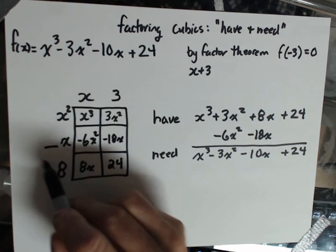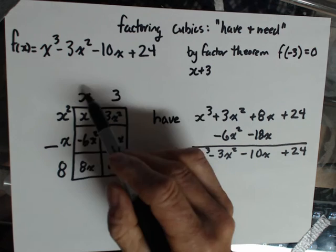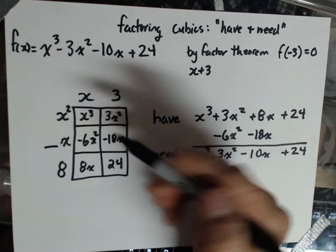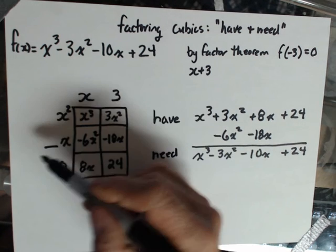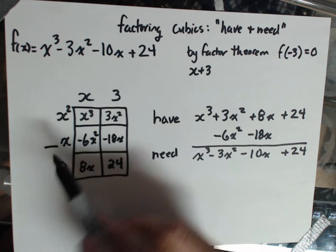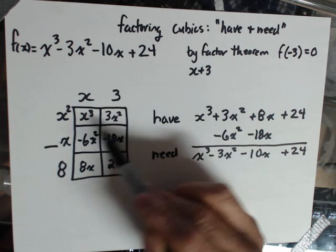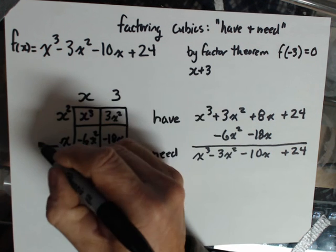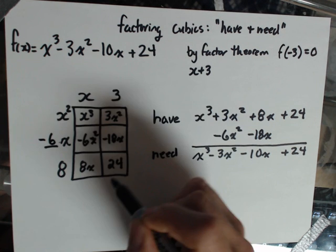And so I know that something times x is negative 6x squared. Obviously there's a negative 6 goes in here and I can verify that by seeing that negative 6x times 3 is negative 18x. So I'm very confident that that's a negative 6x.